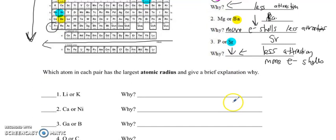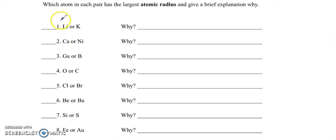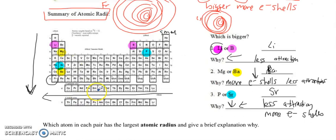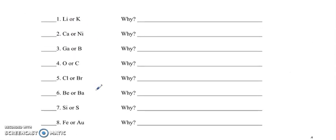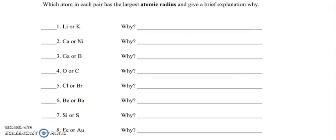Which atom in each pair has the largest atomic radius, and give a brief explanation why? Try these next eight on your own using the rules I just taught you. Then check back after you've paused the video and tell me why. Make sure you use terms like left, right, up, down, and less attraction, more attraction, more shells, less shells. So pause the video and try these next eight problems.